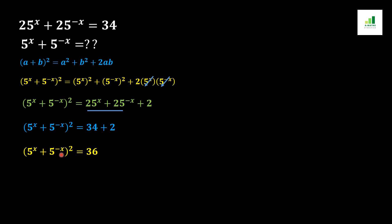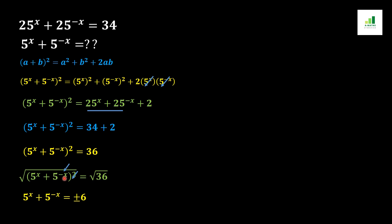In the next step, we apply a square root on both sides of the equation. As a result, the square and root cancel out together, and 5 to the power x plus 5 to the power minus x comes out from the root. On the other side, 36 comes out from the root and converts into plus or minus 6. So this is the answer. I hope this video will be very useful to all of you. If you like this video, please hit the like button and subscribe to our channel. Thank you.